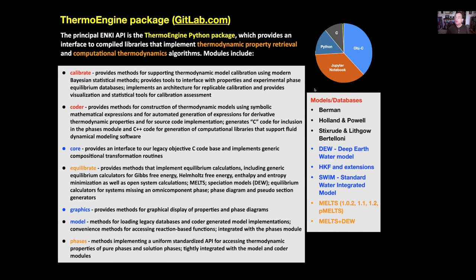The current models available in the Enki package include the Berman and Holland-Powell and Stixrude-Lithgow-Bertelloni thermodynamic models, the deep earth water model, Helgeson-Kirkham-Flowers aqueous solution models, SWIM — which is an integrated standard water model for calculating the properties of water and the dielectric constant of water over a wide high-temperature-pressure range, from the icy oceans of Europa up to high-temperature magmatic conditions at pressures up to about 10 GPa — and, of course, the MELTS models.